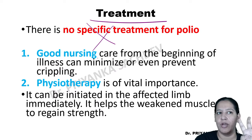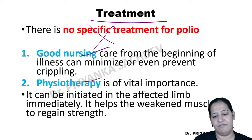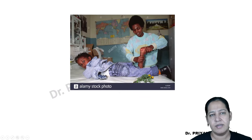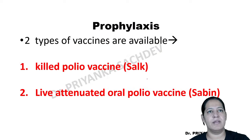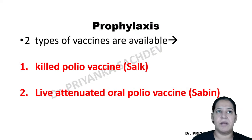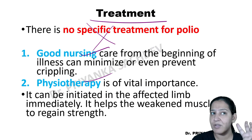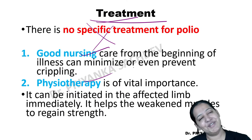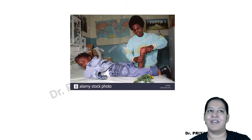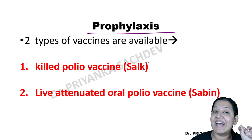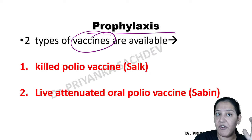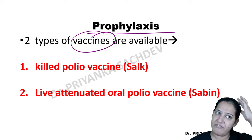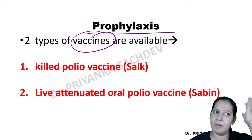There is no specific treatment for polio — only nursing care and physiotherapy. However, prophylaxis is available via vaccination. Two types of vaccines are available: killed vaccine (IPV) and live attenuated vaccine (OPV).